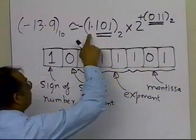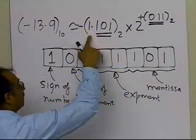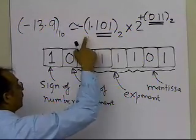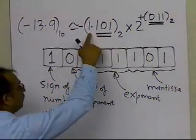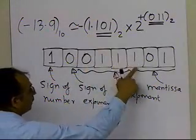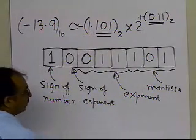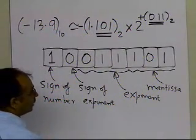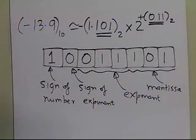Keep in mind that we don't need to represent the 1 before the radix point, because that's automatically assumed — it would be a non-zero number, and in binary format the only non-zero number is 1. So that's why we don't represent this 1 in the mantissa. It's understood that before the radix point there is a 1. So that's what the representation would be for minus 13.9.